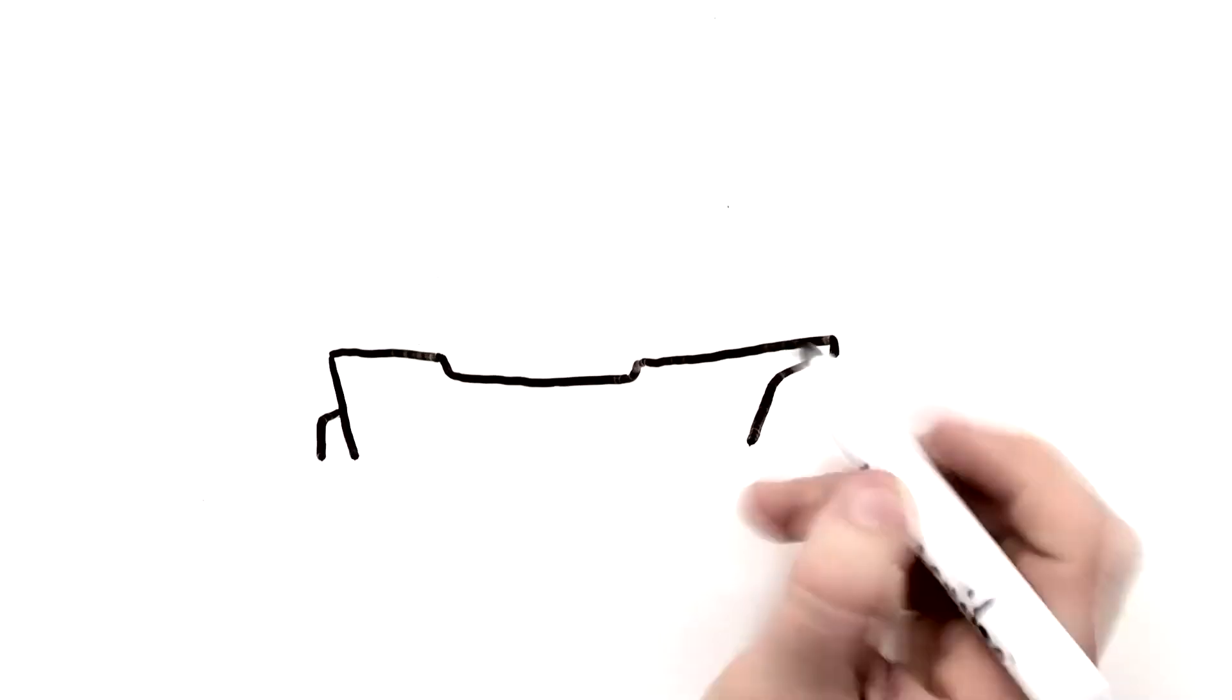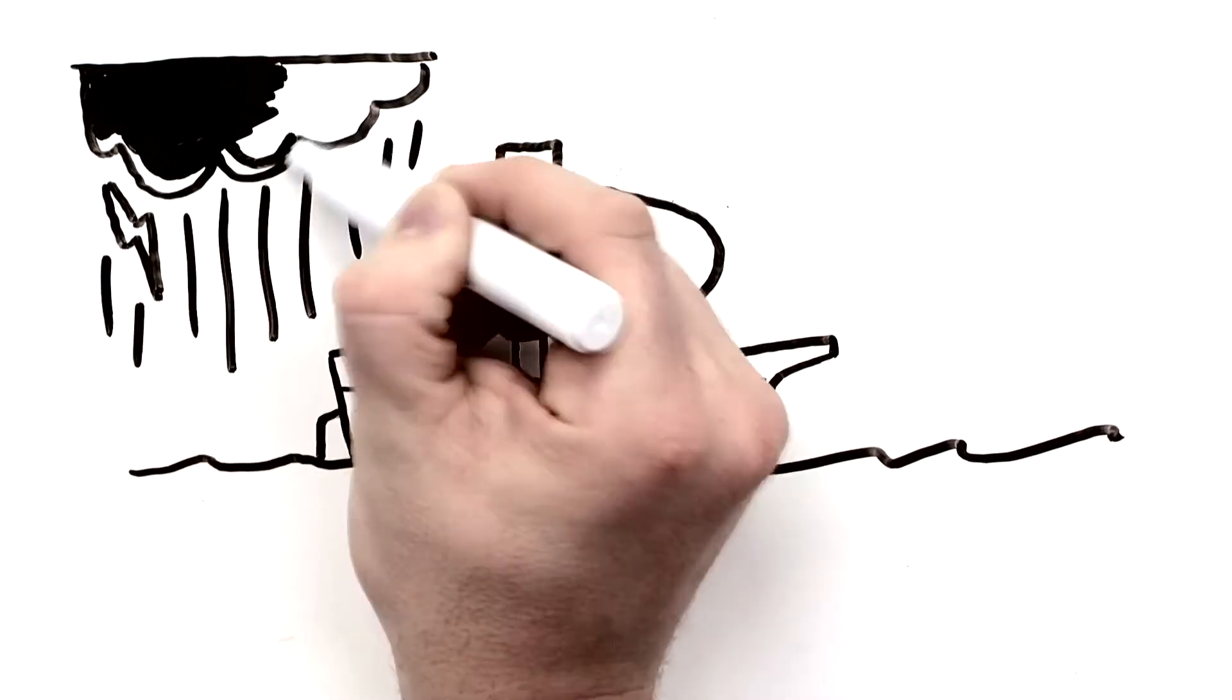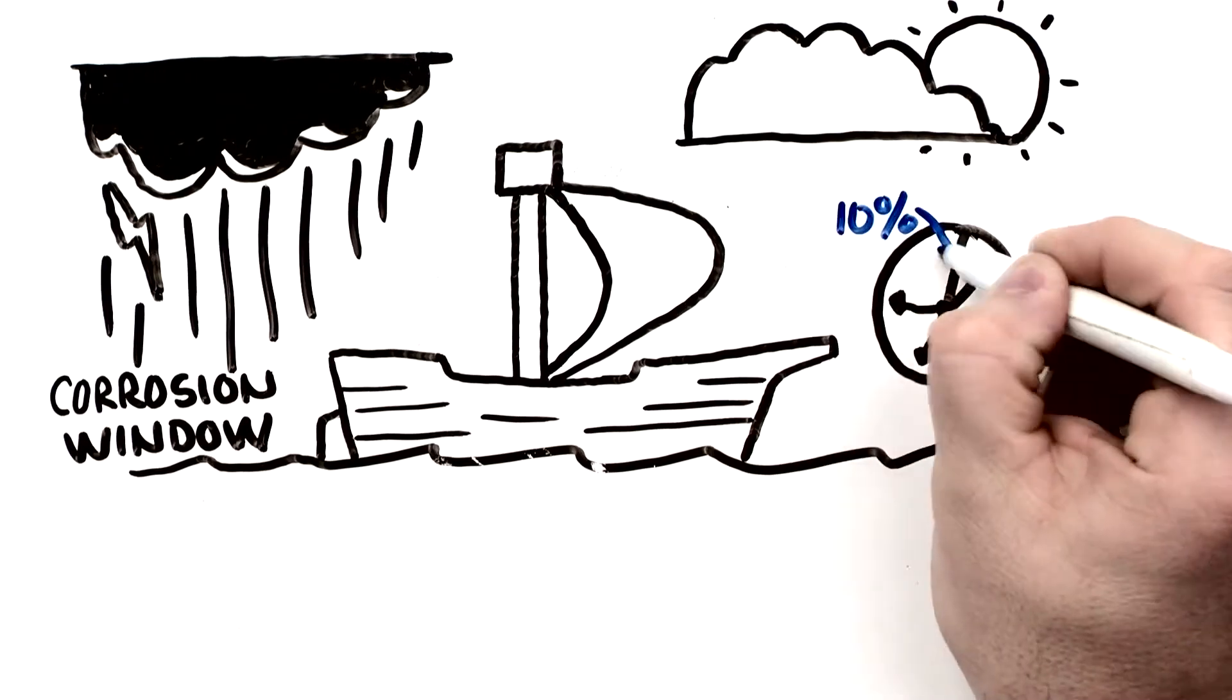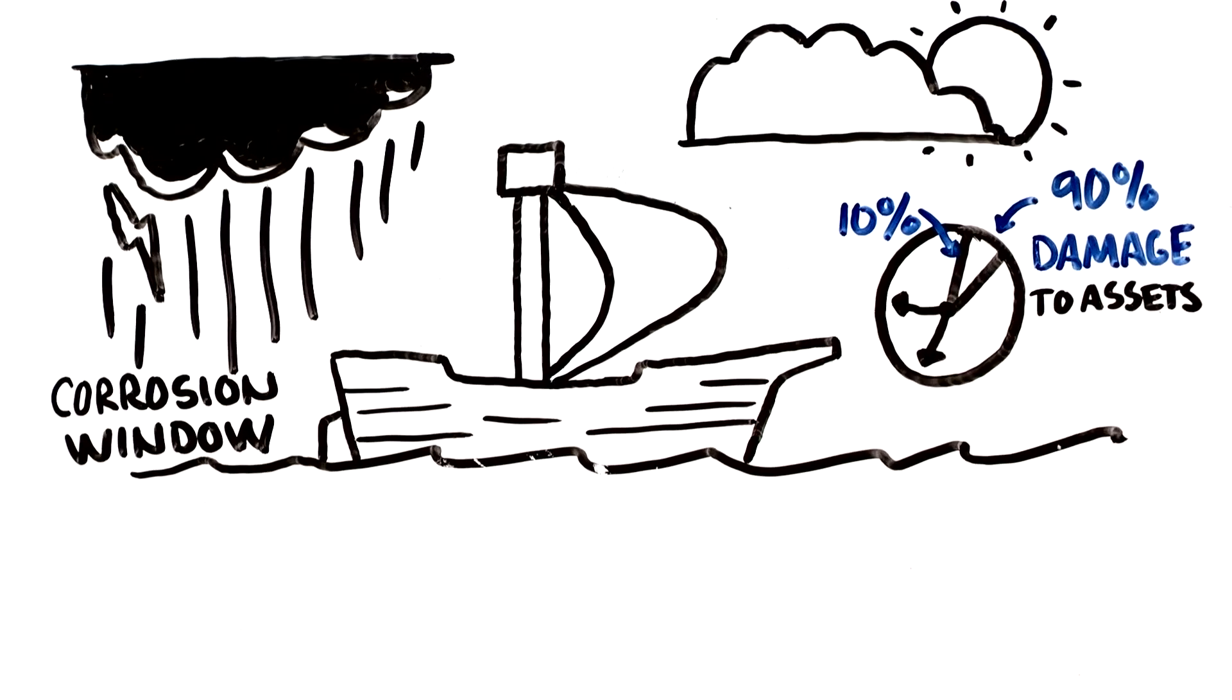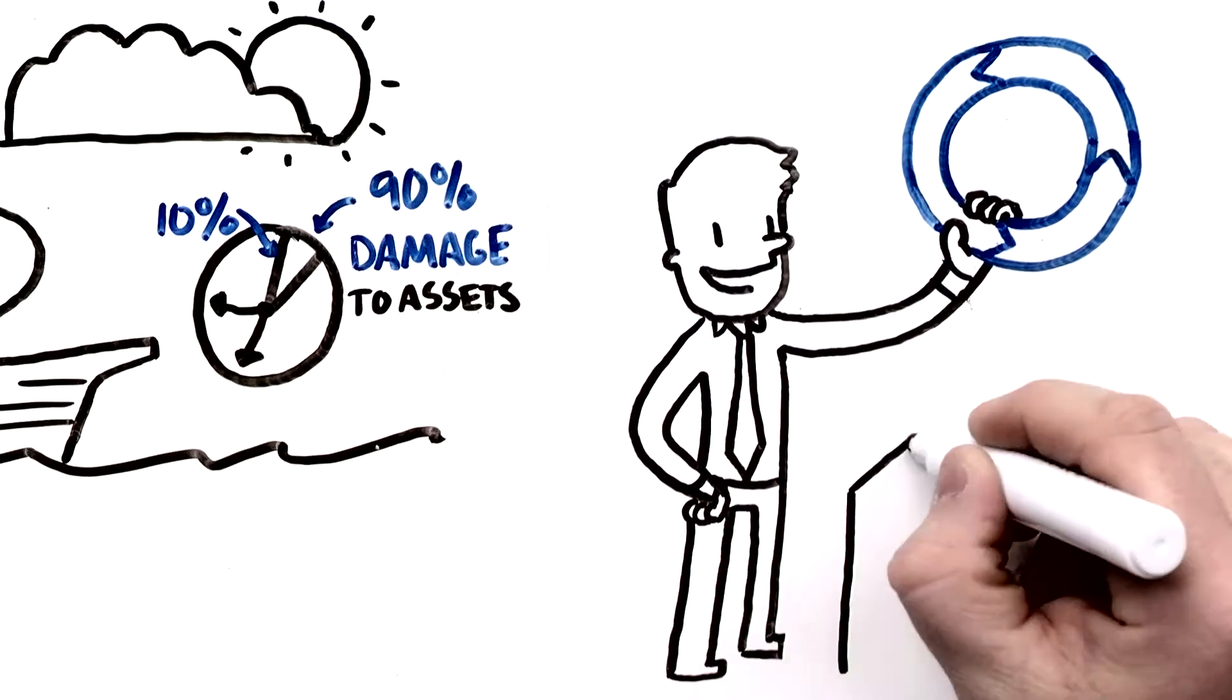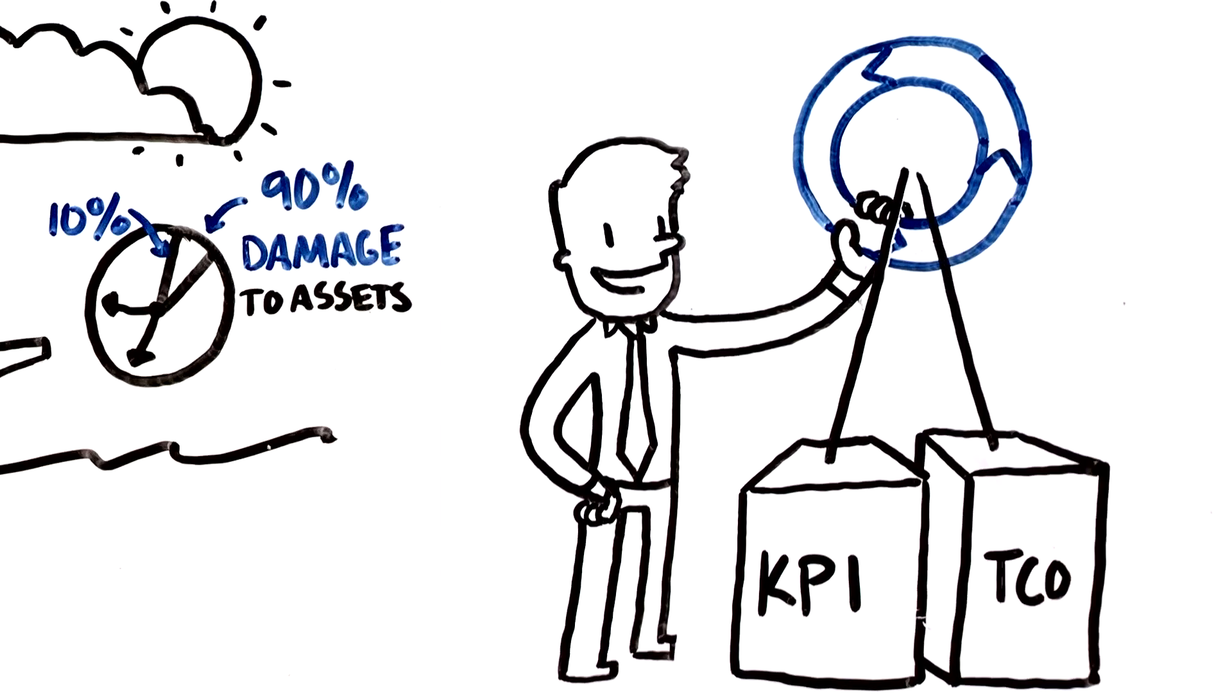As we set sail, our goal is to try to avoid stormy waters, to avoid the corrosion window, that 10% of the time window when 90% of the damage is done to assets. Why do industry leaders use NALCO for control of critical process asset KPIs and optimization of TCO?